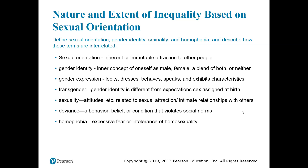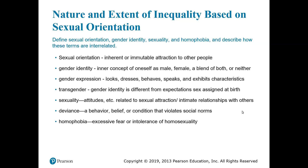Heterosexual individuals who prefer opposite-sex emotional-sexual relationships are sometimes referred to as straight. Researchers at the University of Chicago established three criteria for identifying people as homosexual or bisexual: sexual attraction to persons of one's own gender, sexual involvement with one or more persons of one's own gender, and self-identification as a gay man, lesbian, or bisexual. Nearly 25.6 million people in the United States, about 11 percent of the population, have acknowledged at least some same-sex attraction, while about 19 million or 8.2 percent have had at least one same-sex encounter.